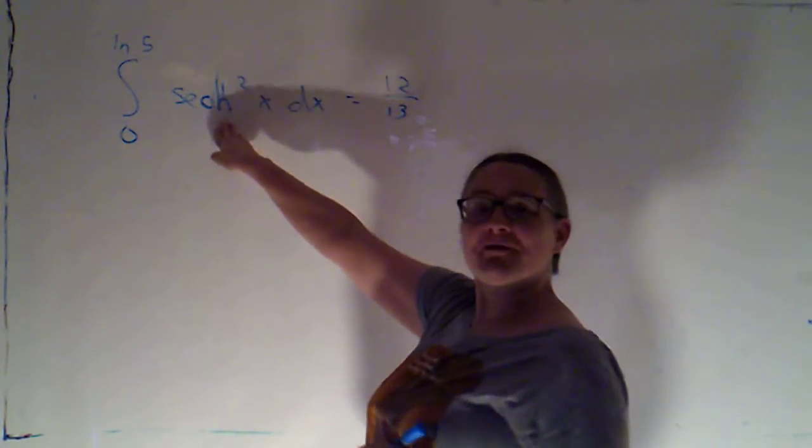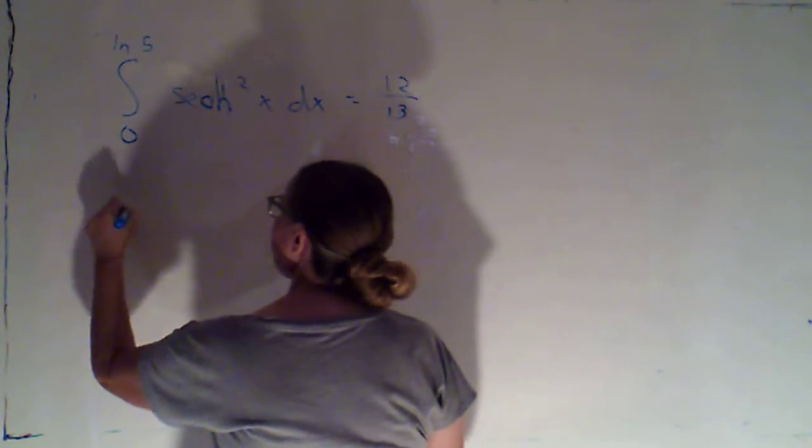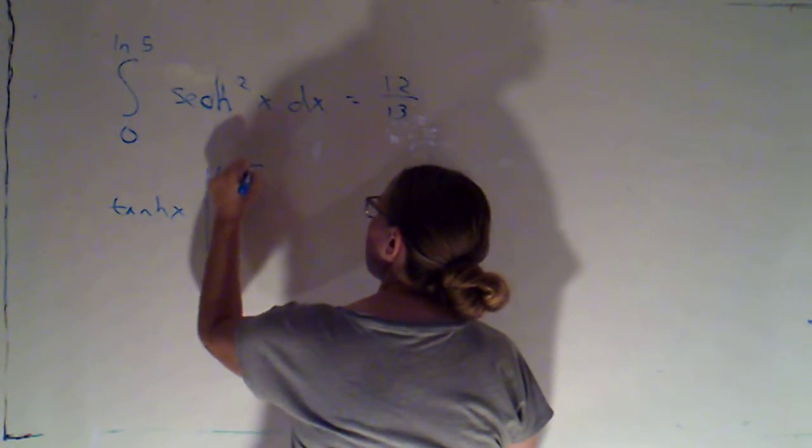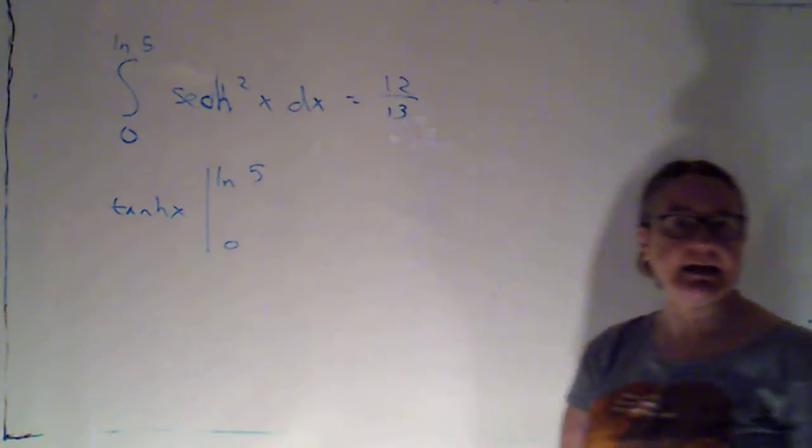Alright, the antiderivative of sech squared is going to be tanh. And we'll be evaluating that between the natural log of 5 and 0.